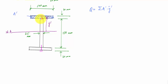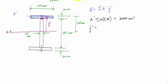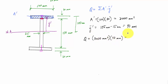Choosing the top flange as A′: A′ = 100 mm × 30 mm = 3000 mm². The distance from the neutral axis to the centroid of the top flange is 105 mm − 15 mm = 90 mm. So Q = 3000 × 90 = 270,000 mm³ = 0.270 × 10⁶ mm³. This is the first moment of area for one shear plane.